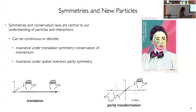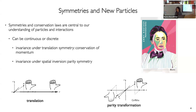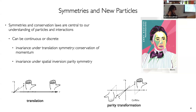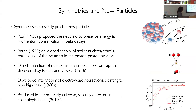As a theorist, one of the ways — and I think all of us like to think about — organizing these problems is in terms of symmetry properties. Symmetries and conservation laws are central to our understanding of the current state of particles and interactions. They can be continuous or discrete. We've talked about discrete symmetries, parity and time reversal. You can also have continuous symmetries like translation symmetry, which leads to momentum conservation. This has led to actually successful predictions in the past.